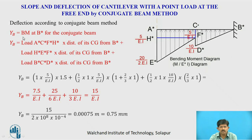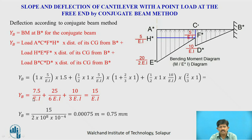To find deflection yB, it equals the bending moment at B of the conjugate beam. yB is computed as the rectangular load contribution multiplied by its distance from B, plus the triangular load (H*F*E*) multiplied by the centroid distance from B, plus the triangular load (B*C*D*) contribution. Summing these: yB = 7.5/EI + 25/(6EI) + 10/(3EI) = 15/EI. Substituting EI, yB = 0.00075 m = 0.75 mm.